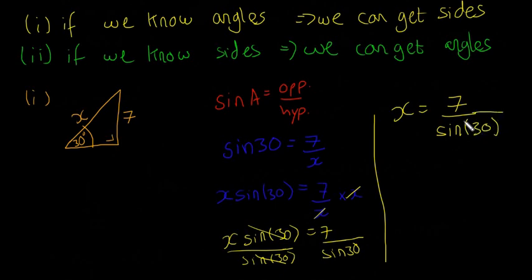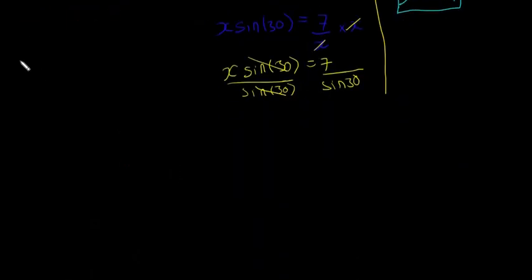Your calculator will find out what sine 30 is, and you'll be left with X equals 14. So that's one example of why sine, cos and tan are useful.